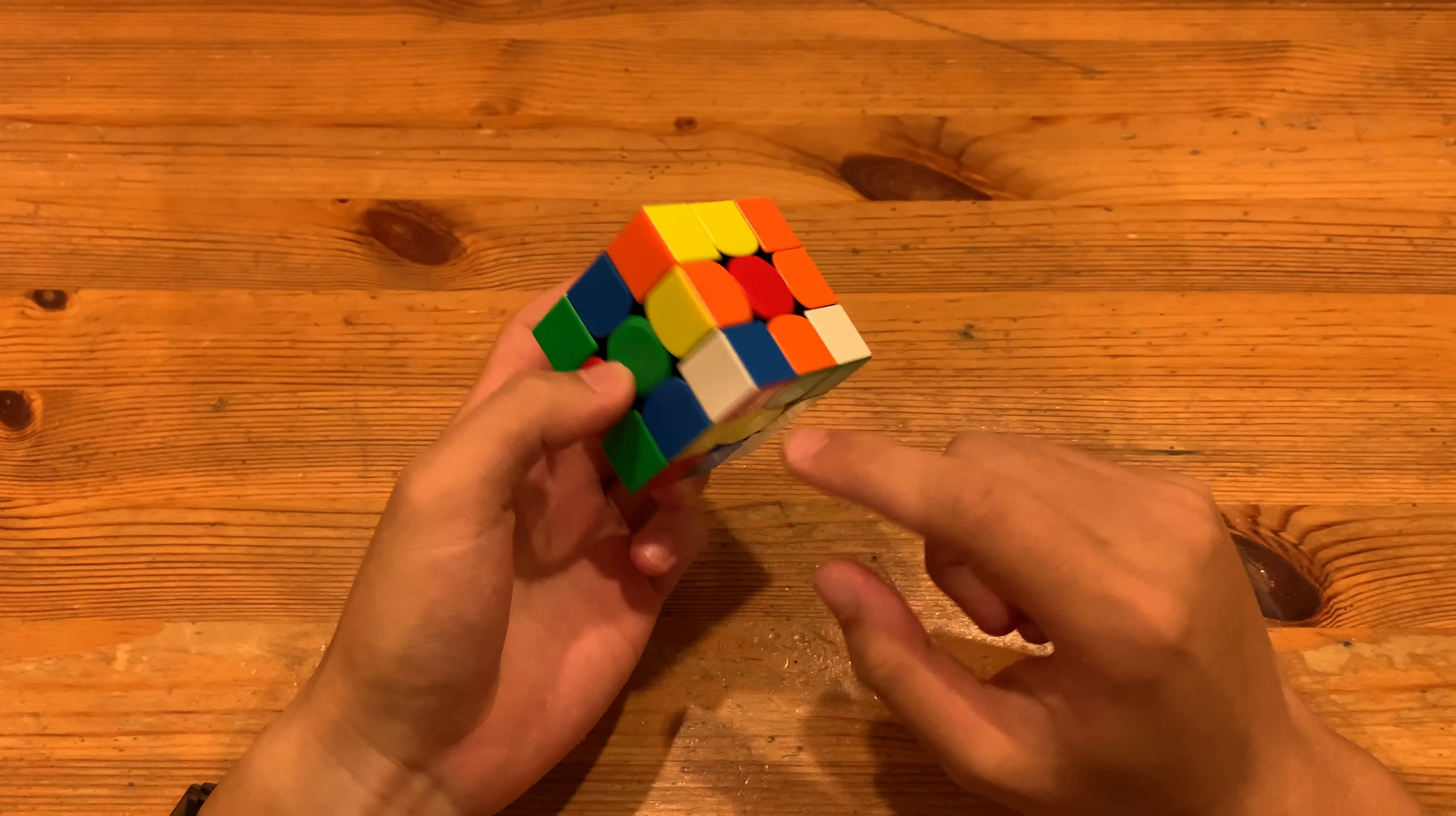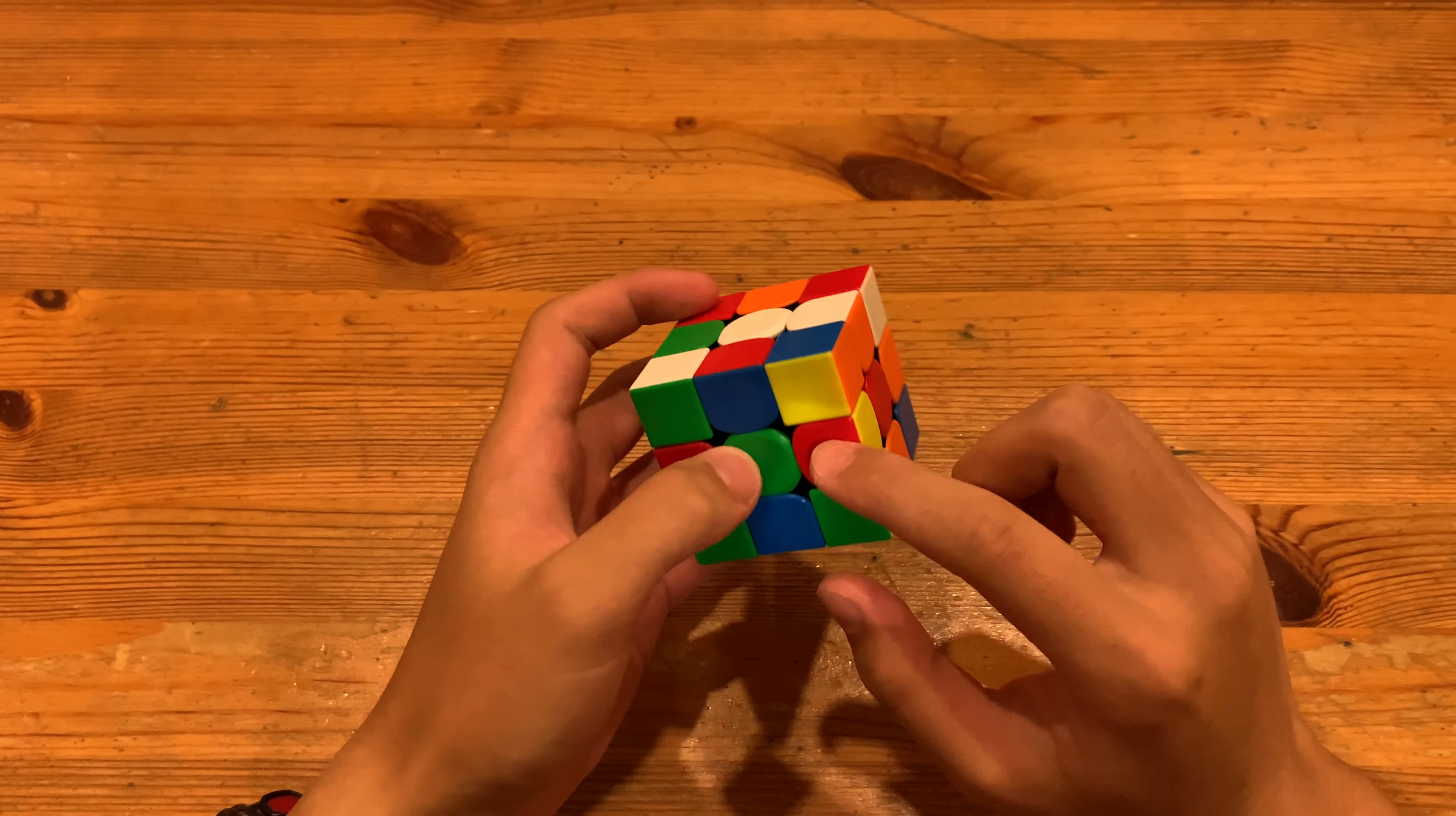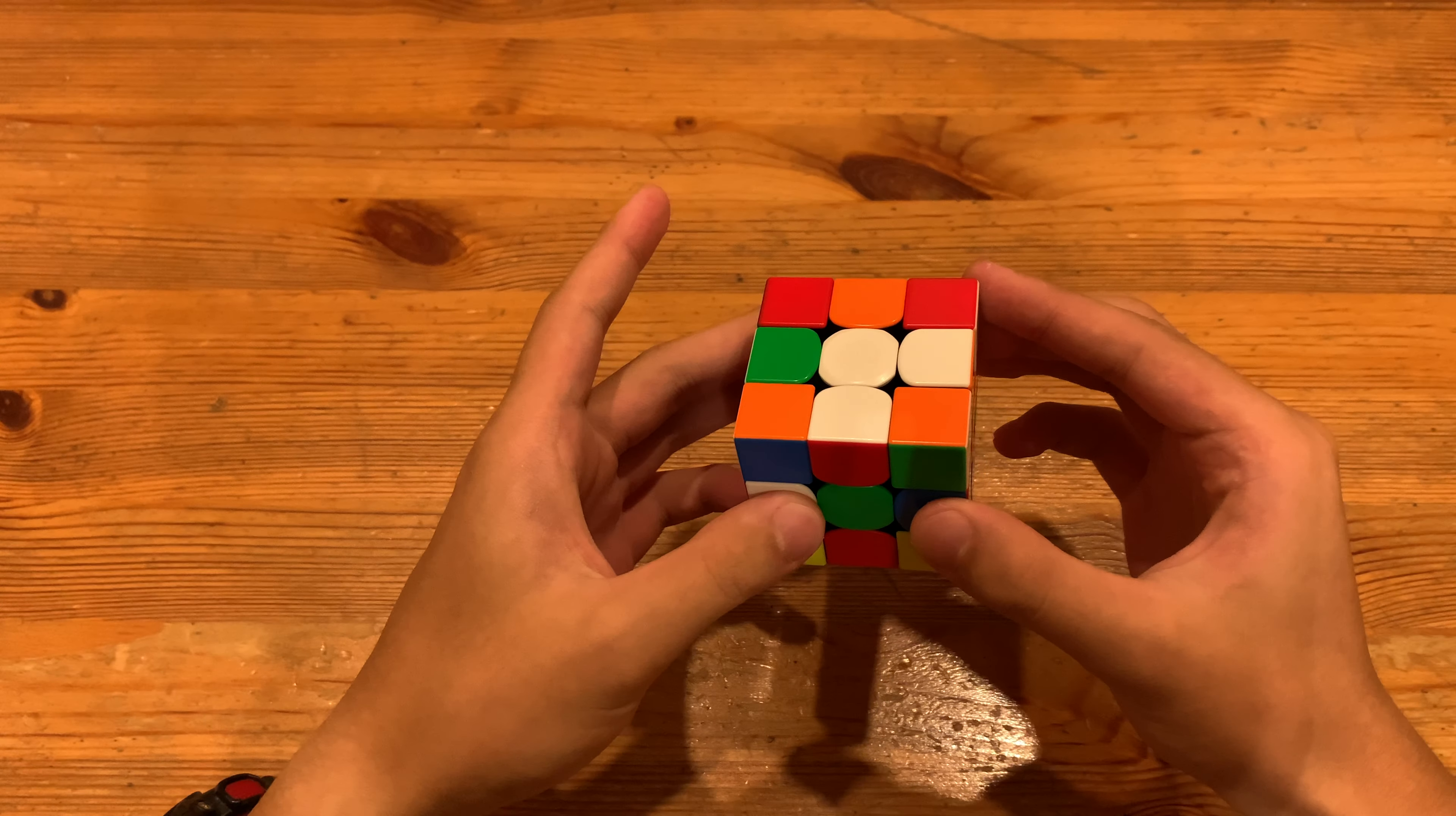Next he did a D to move these two cross edges over here, insert the orange one, and then he only had one last cross edge left. So he did D, F to insert and then align the entire cross with the D.